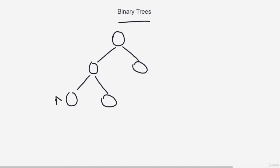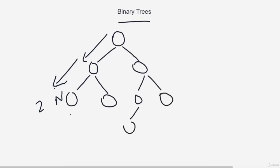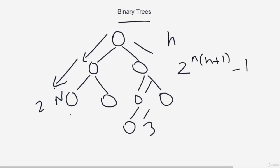The depth of a node n is the number of nodes when you try to reach it from the root, excluding n itself. The height of a binary tree is the maximum depth of any node in the tree. If you have a binary tree with height h, you can find the maximum number of nodes using the formula: 2^(h+1) - 1.